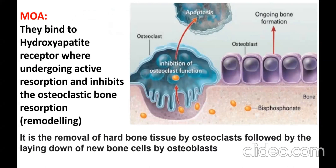We have a mechanism image for the key drugs. The orange molecules represent bisphosphonates. Osteocytes are bone cells. Osteoclasts are responsible for bone resorption. Apoptosis is cell degeneration of the osteoclast. There is an ongoing bone formation process by osteoblasts shown in violet or lavender color.